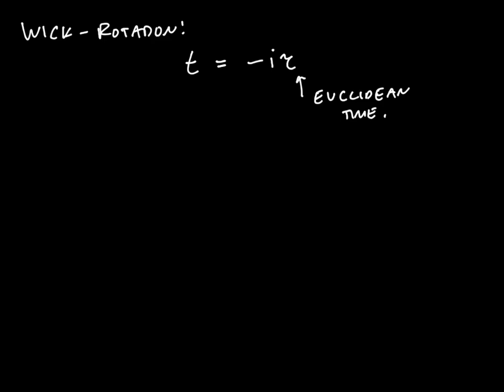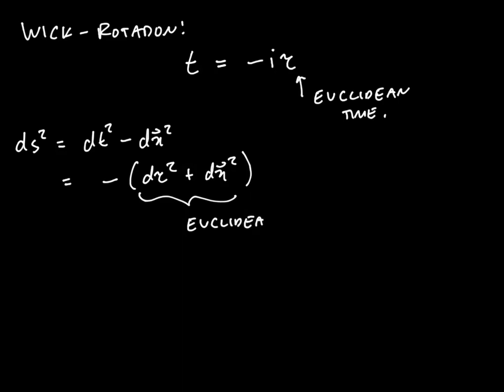It's called Euclidean time. Why am I calling it that? Let's look what happens to the metric. The metric used to be dt squared minus dx squared. It now becomes minus d tau squared plus dx squared. This overall minus sign isn't important. Notice the whole thing just now looks like it's a spatial Euclidean space.